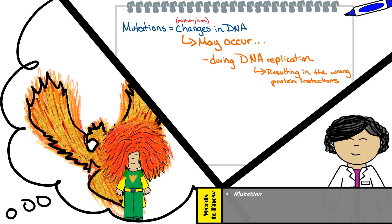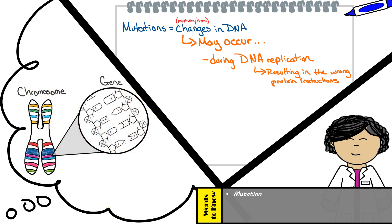Mutations will result in incorrect protein instructions because of a change in a gene or perhaps the entire chromosome, which is why we have two main categories for mutations. Gene mutations are those mistakes in DNA that affect a gene. Chromosomal mutations are those that affect the number or structure of chromosomes. In today's lecture, we're going to be focusing primarily on gene mutations, and in later lectures we will discuss chromosomal mutations, which may occur during cell division.